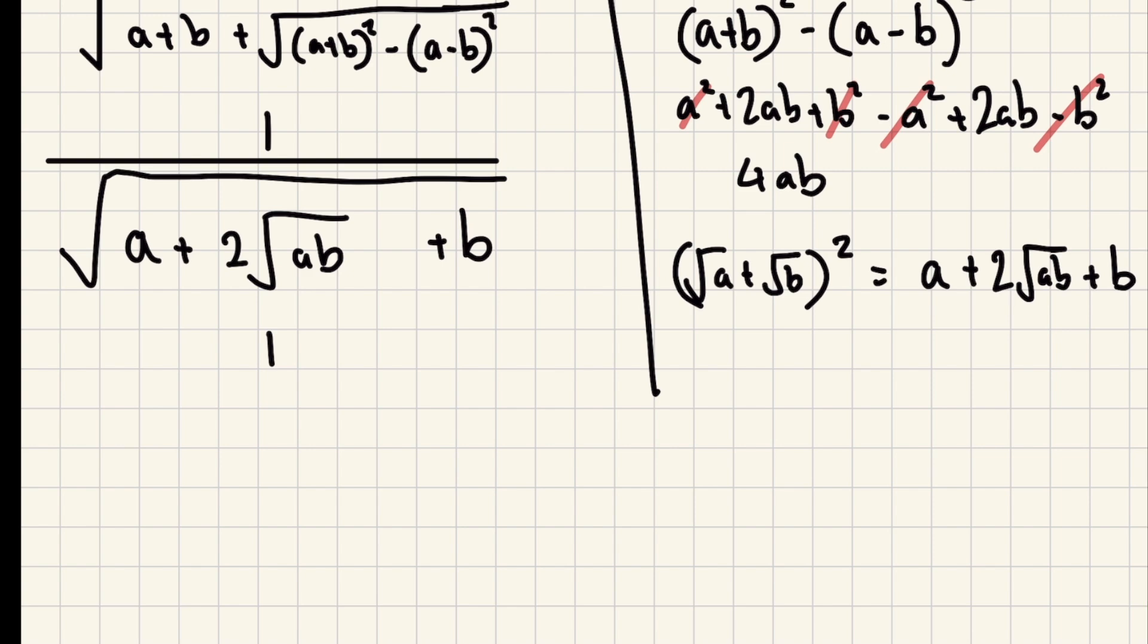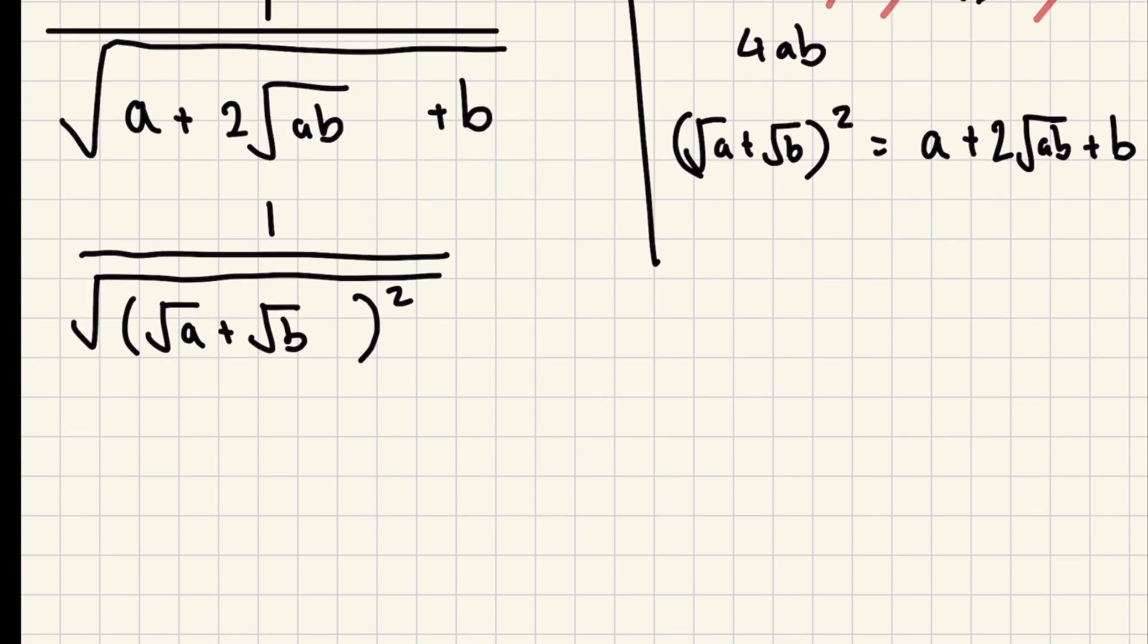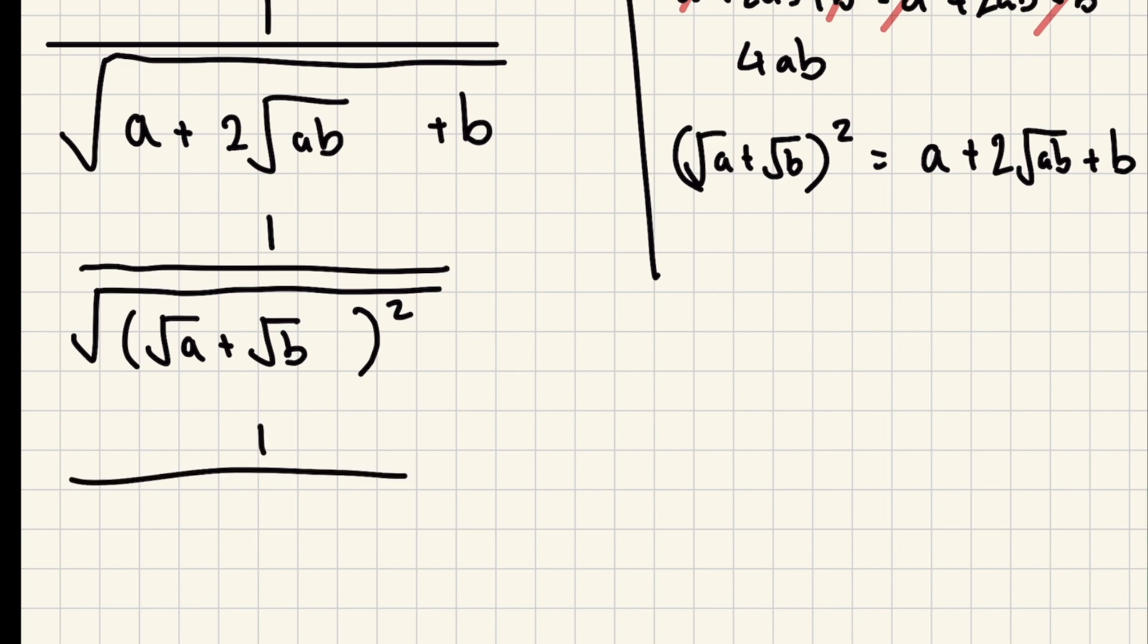So now we can rewrite this whole thing as one over the square root of something squared. That's going to cancel out, square root of a plus square root of b, and then we're going to end up with one over the square root of a plus the square root of b.